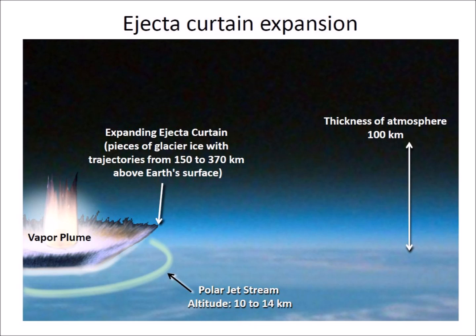The second atmospheric effect of the extraterrestrial impact was to shift the polar jet stream southward from the impact point and to lower the fast-moving band of air toward the surface from its normal altitude of 10 to 14 kilometers.